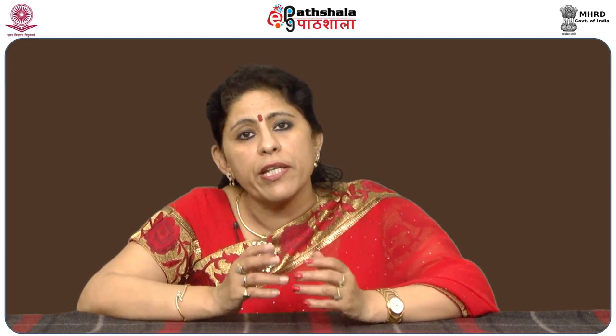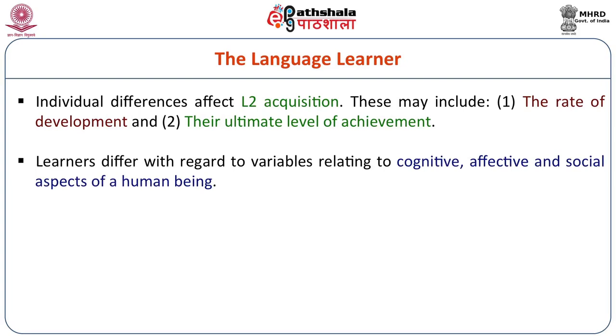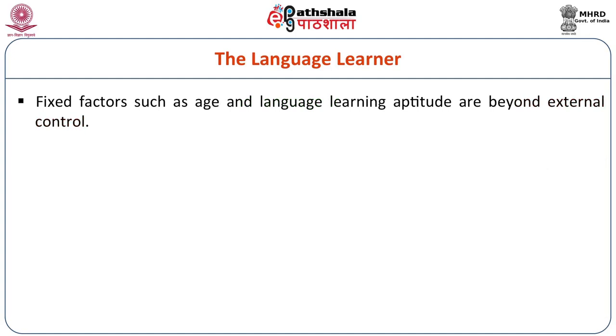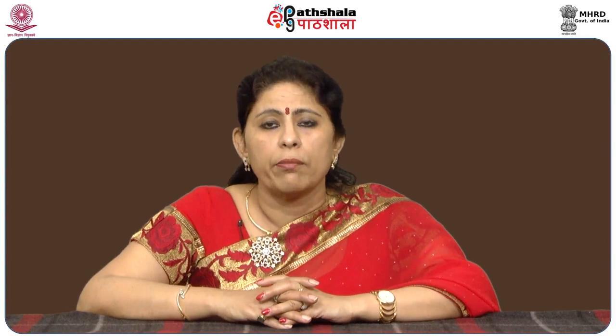Individual differences affect L2 acquisition and may include the rate of development and the ultimate level of achievement. Learners differ with regard to cognitive, affective, and social aspects. Fixed factors such as age and language learning aptitude are beyond external control — a younger learner may adopt things more quickly while adult learners may take more time. Variable factors such as motivation are influenced by external factors such as social setting and the actual course of L2 development.